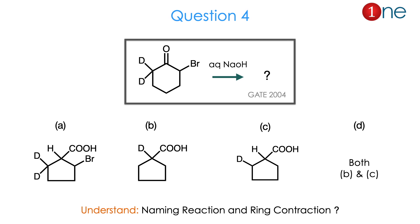Question 4. The starting material is a ketone which has two alpha deuterium atoms and a bromine. You are using base. There are possibilities including ring contraction. The position of deuterium and position of bromine is the question — whether bromine is removed, which deuterium is removed, or which deuterium migrates. From the starting alpha-haloketone, you might guess the Favorskii rearrangement is involved and ring contraction will occur. The answer is D.